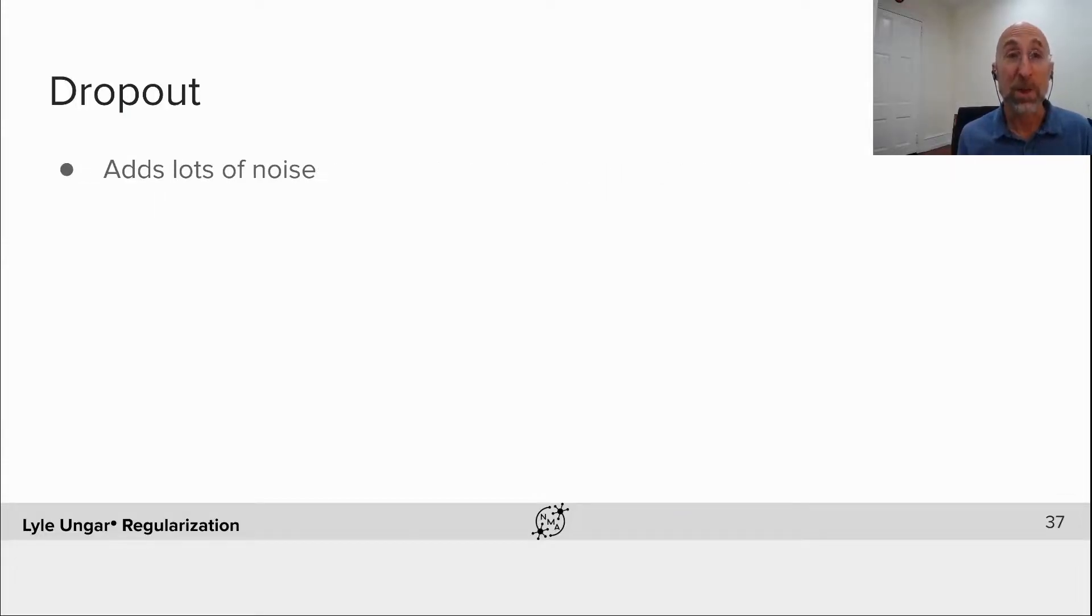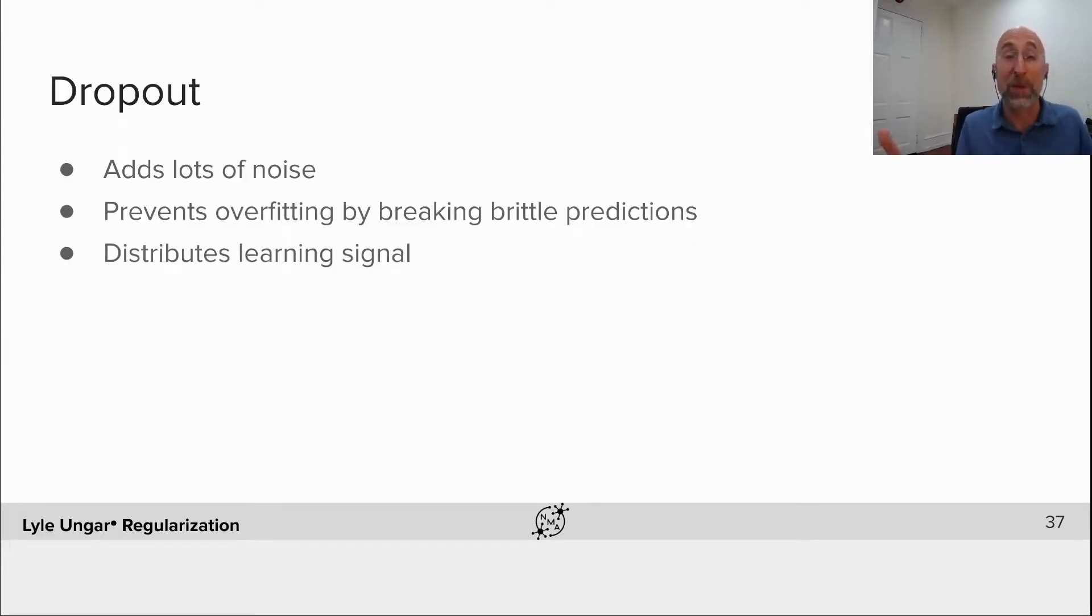So what is it doing? Adding noise, preventing overfitting by breaking brittle predictions. It tends to make sure that the signal is spread over lots of neurons. If you don't have dropout, some neurons end up getting a zero output—they just become frozen, useless pieces. It forces a distributed representation that uses all of the nodes.